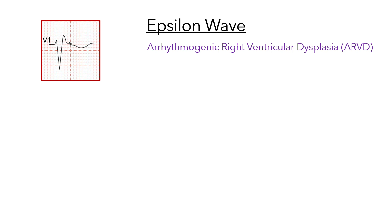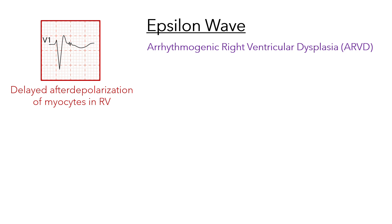Epsilon waves are thought to represent delayed after-depolarizations of some myocytes of the right ventricle. They occur due to the presence of fibro-fatty tissue in the myocardium, which disrupts the normal electrical conduction pathways and causes a delay in excitation of some myocytes.